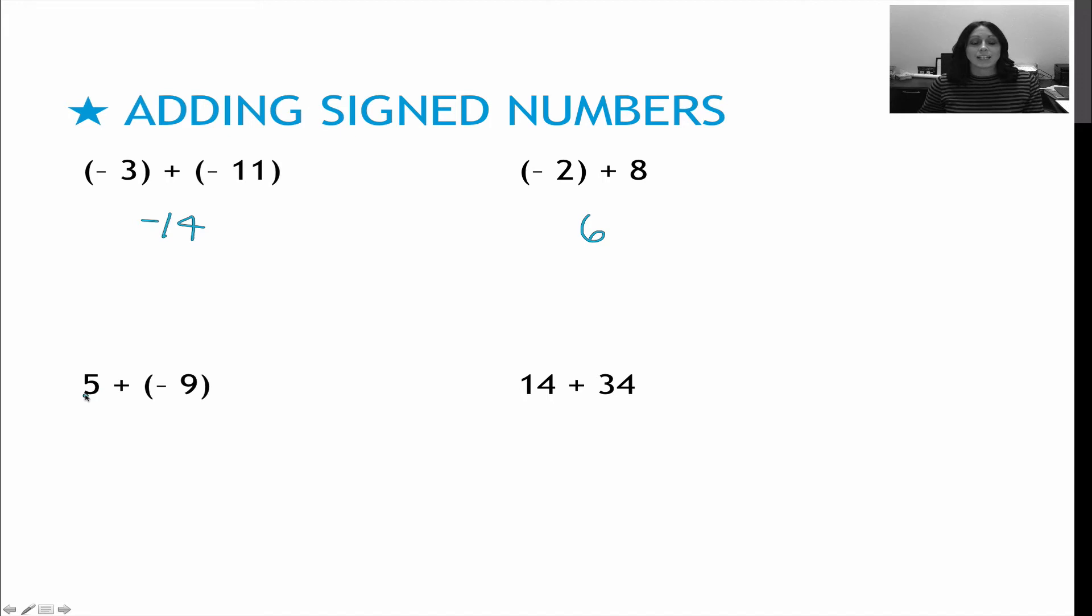5 plus negative 9, different signs. So I find the difference between 5 and 9, which is 4. In this case, my 9 is the bigger number, and that answer is negative, so my answer is also negative. And my last one, 14 plus 34, these are both positives. They have the same sign, so I just find the sum, and when I add them together, I get 48.